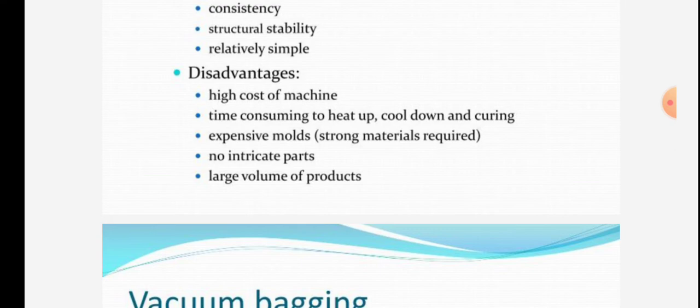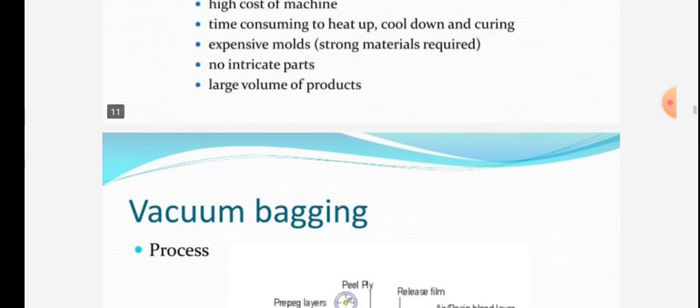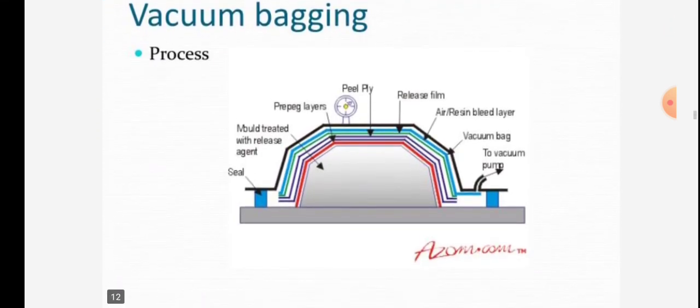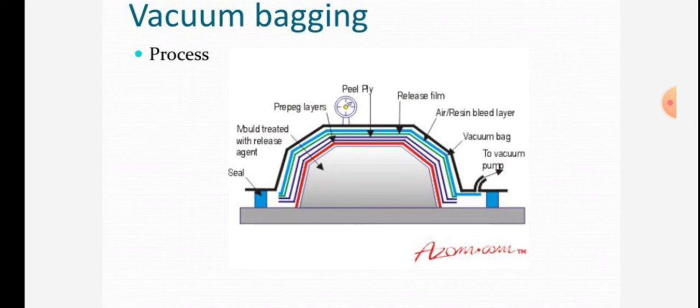Next process is vacuum bagging. In this process shown in the figure: seal, mold treated with release agent, repeat layers, peel ply, release film, air resin bleed layer, and vacuum bag to vacuum pump is given in the diagram.